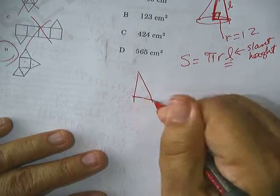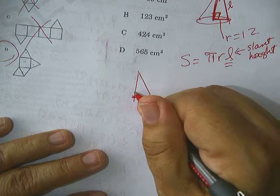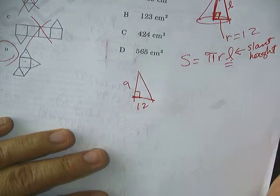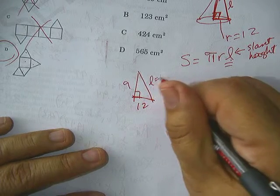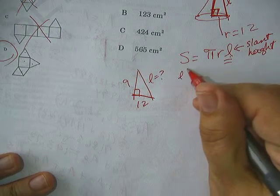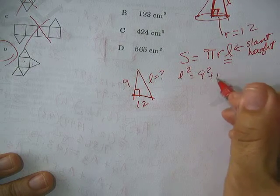So I'm going to redraw it down here. And maybe it'll be a little closer. This is 12. This is 9. And then this is L equals question mark. You can use Pythagorean theorem. L squared equals 9 squared plus 12 squared.